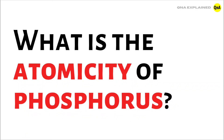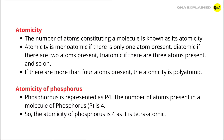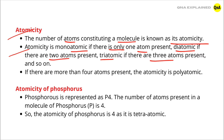What is the atomicity of phosphorus? Atomicity: the number of atoms constituting a molecule is known as its atomicity. Atomicity is monoatomic if there is only one atom present, diatomic if there are two atoms present, triatomic if there are three atoms present.